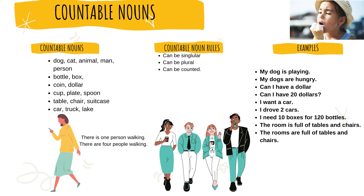Here are some rules for countable nouns. They can be singular — a man. Or they can be plural — men. They can be singular: one dog. Or plural: many dogs or ten dogs. And they can be counted.